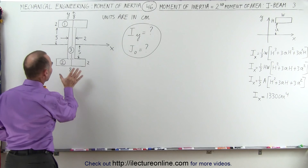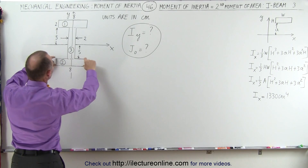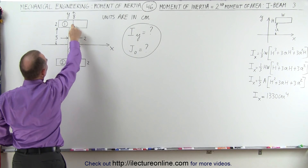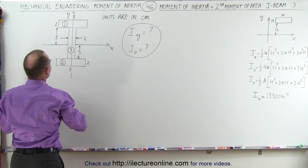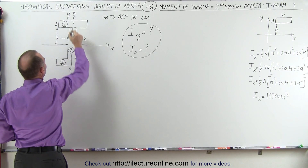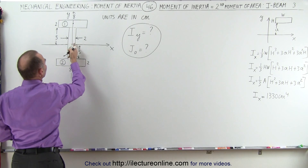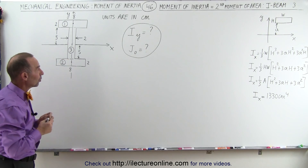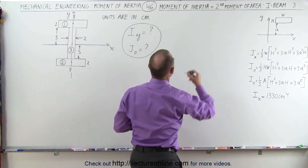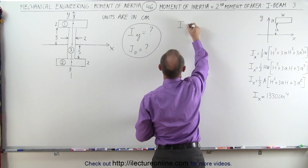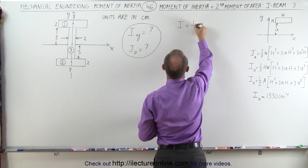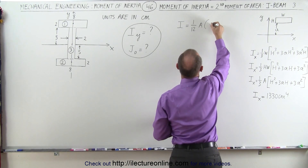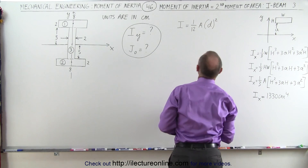We have three sections: two horizontal sections at the top and bottom, and a central section. When rotating about the Y-axis, each of these sections is rotating about its center of mass. The moment of inertia relative to an axis is equal to 1/12 times the area of that section times the distance in that dimension squared.